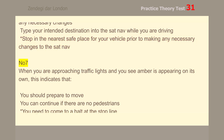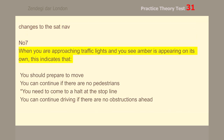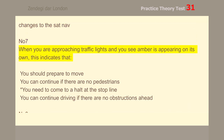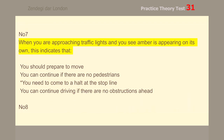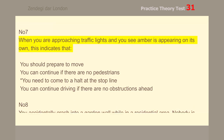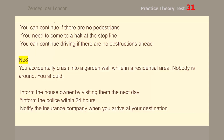Number 7. When you are approaching traffic lights and you see amber appearing on its own, this indicates that you need to come to a halt at the stop line.